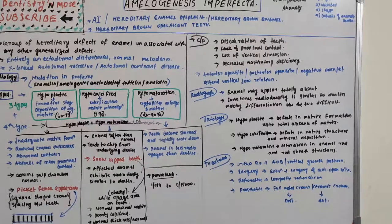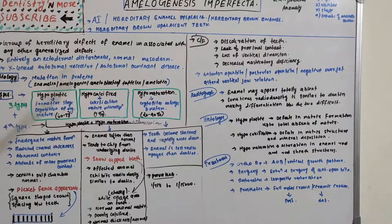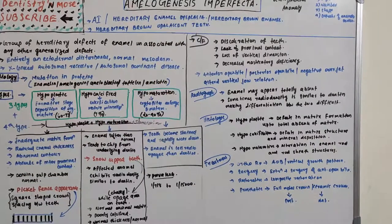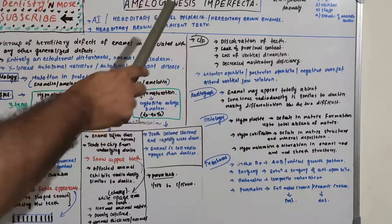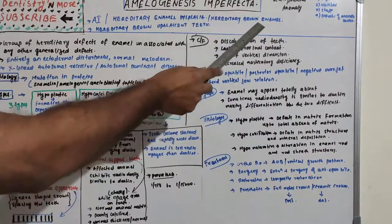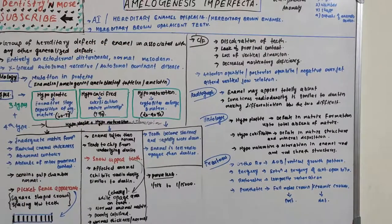This condition has many names. It is popularly abbreviated as AI — while AI usually stands for artificial intelligence, in dentistry AI is Amelogenesis Imperfecta. Other names include Hereditary Enamel Dysplasia (dysplasia meaning improper cell production), Hereditary Brown Enamel (due to the color of the affected enamel), and Hereditary Brown Opalescent Teeth (due to the appearance of the teeth).